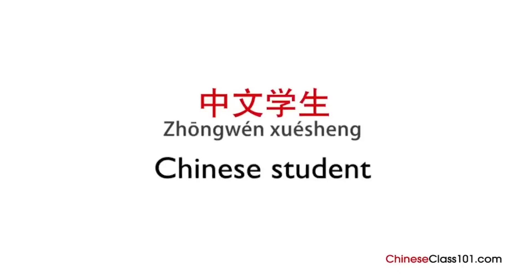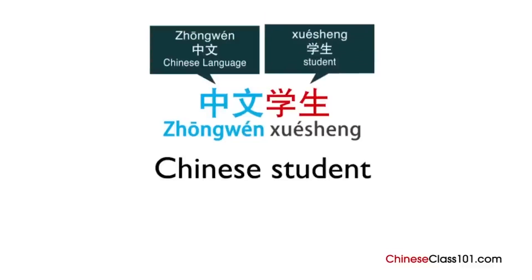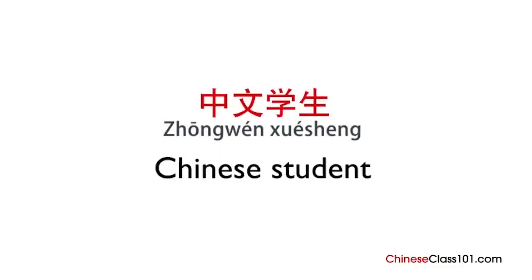When you introduce yourself, you might want to tell people a little more than your name. You are learning Chinese, so let's say you want to tell people you are a Chinese student. In Chinese, this is 中文学生. The first word 中文 is the word for the Chinese language, and 学生 means student. All together, it's 中文学生.